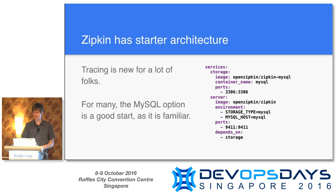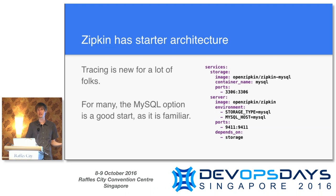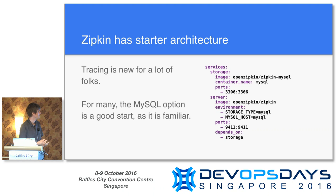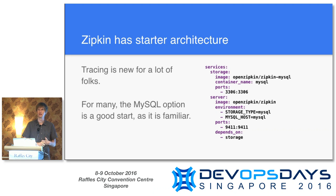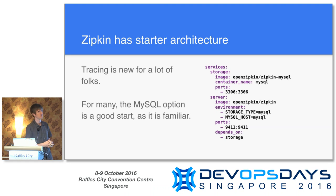Because tracing is new for a lot of folks, it's often good to start with something like MySQL. Zipkin's architecture is pluggable — if you're familiar with Docker, this is literally a Docker Compose file that should actually work if you paste it. We try to keep everything very simple with minimal configuration required. You just need to tell it what type of storage and you're ready to go.